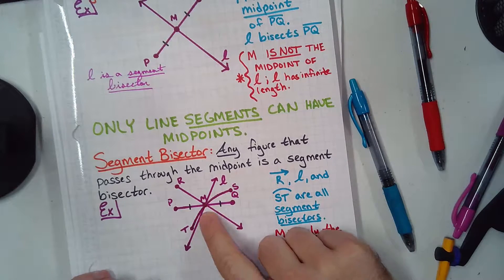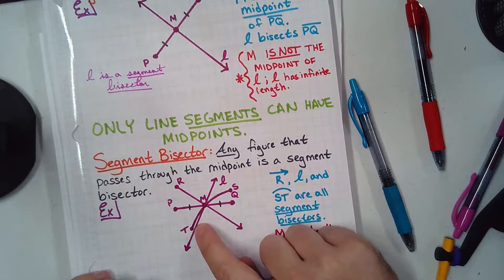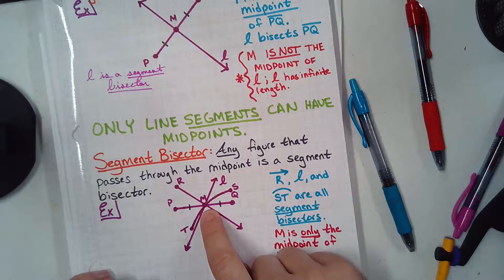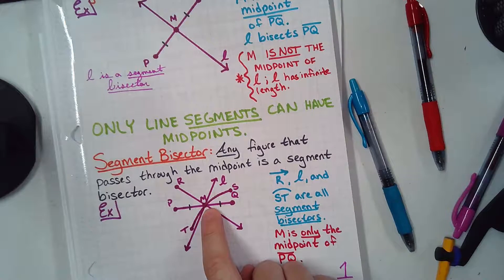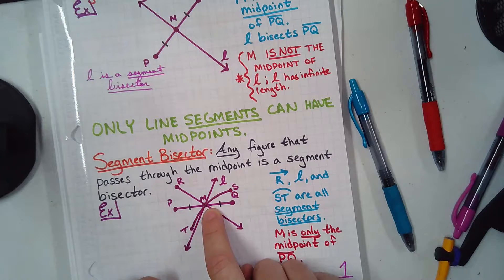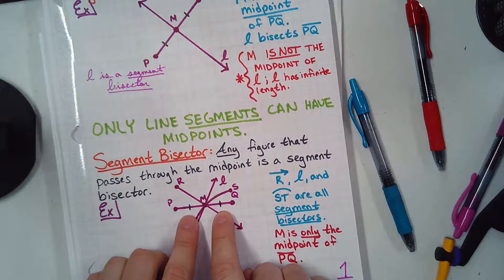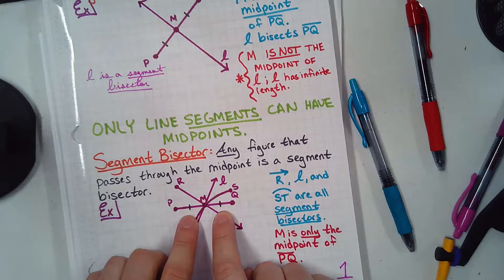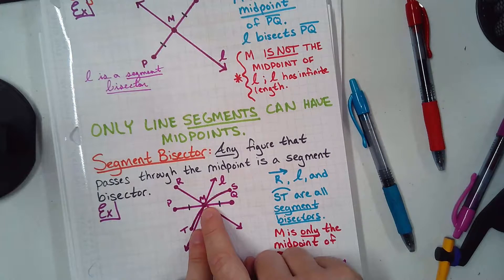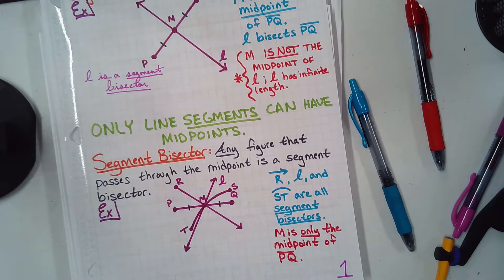Look at arc TS. That curve right there. Arc TS goes through M, so it bisects PQ. Do we know that M is the midpoint of the arc? No. We know it's the midpoint of PQ because see the two little dash marks? That means they're congruent. Does it say TM is congruent to MS? No. So, we don't know that. It could be, but we don't know it.